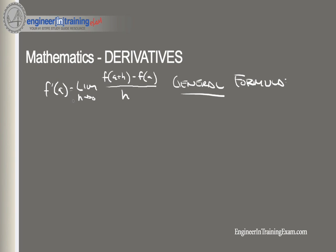So f'(a) represents the slope of the tangent line to the curve at a, or equivalently the instantaneous rate of change of that function at a. There are a few ways to express the derivative of a function, but all mean the same thing: f'(x), y', dy/dx, or d/dx of f(x). We'll be using the f' notation throughout this review.